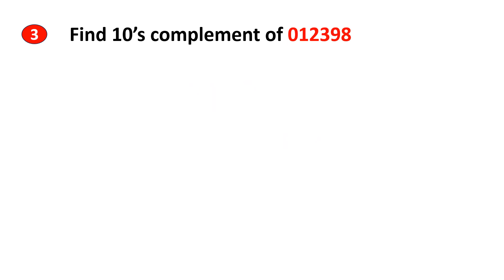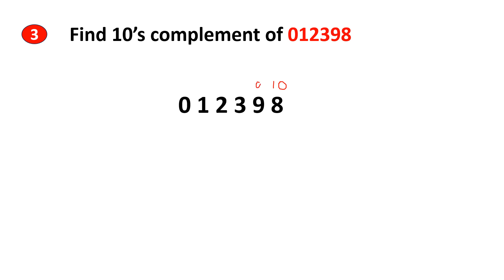Problem 3: find the 10's complement of the given decimal number. First, we write the least significant 0s as they are, but in this number there are no least significant 0s. The first non-zero least significant digit is 8, so we subtract 8 from 10. 10 minus 8 is 2.